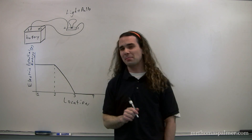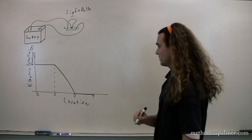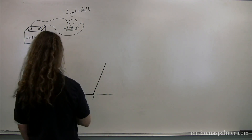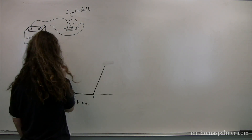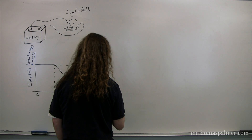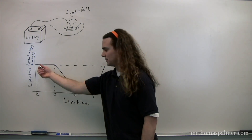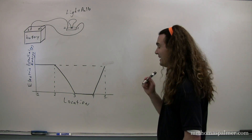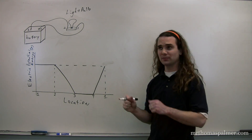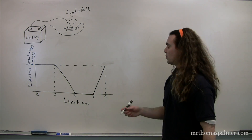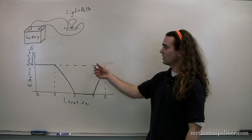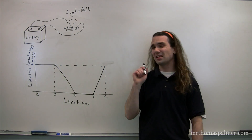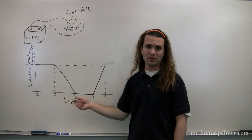Then we get to the battery. The job of the battery is to add energy to the electrons, so the electrons actually increase in energy as they go from 4 back up to 1. From 4 to 1 is across the battery — the battery is basically a charge pump. It increases the electric potential energy of those electrons. Remember, the electrons are moving the opposite direction from the conventional current. As they go through the battery, they gain electric potential energy. Then they go across the wire without losing any. And as they go across the light bulb from 2 to 3, they lose electric potential energy. It's basically a giant loop that keeps happening.